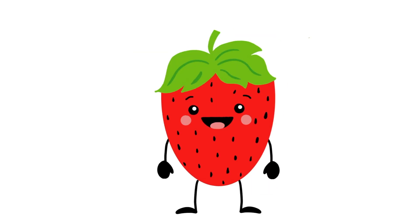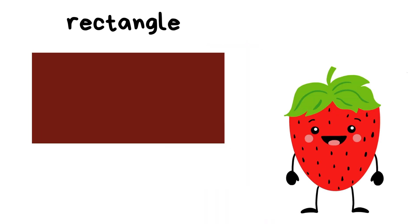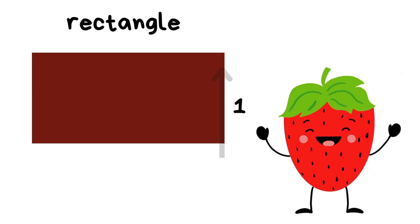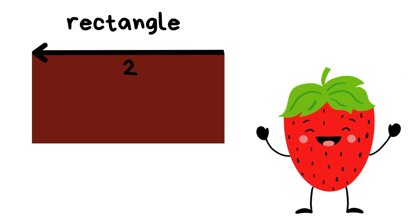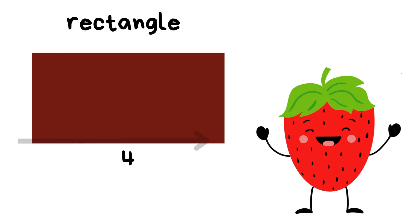Hello everyone! Today we're going to be learning about a new shape. The way we identify a shape is by counting the straight sides that the shape has. Our new shape today is called a rectangle. Say 'rectangle!' Let's count how many sides a rectangle has: one, two, three, four. A rectangle has four sides.